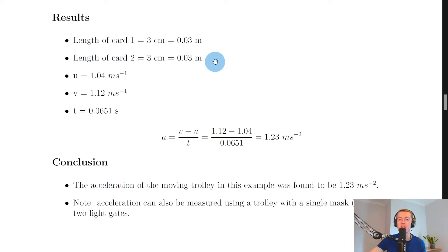And the TSA timer in this case gave us an initial velocity u of 1.04 meters per second and a final velocity v of 1.12 meters per second.